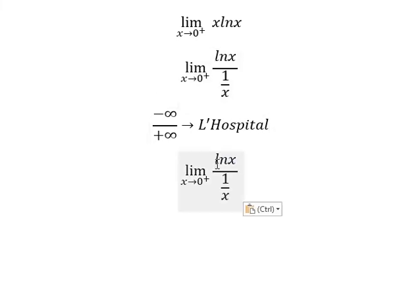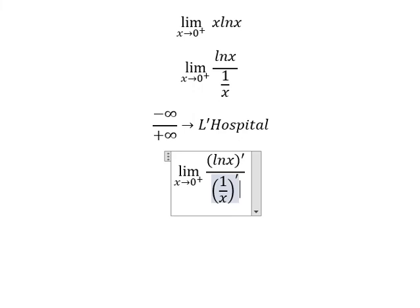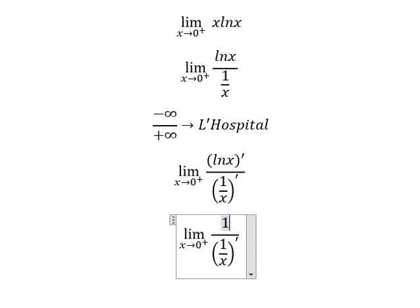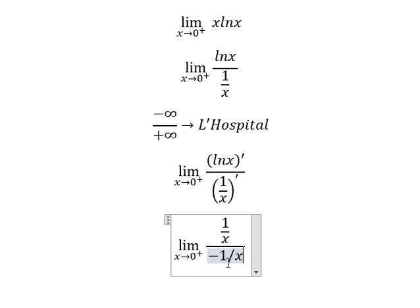That means we take the derivative of the numerator and denominator. This one we have 1 over x. This one we have negative 1 over x square.